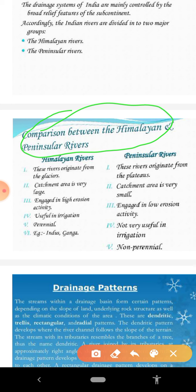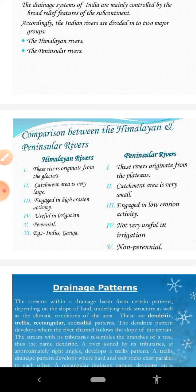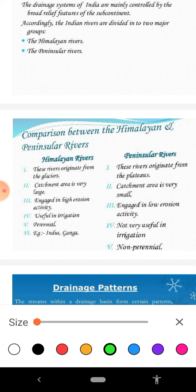Another important point: the catchment area of Himalayan rivers is very large, whereas the catchment area of Peninsular rivers is very small. Catchment area is the area from which a river gets its drainage, or its source of water. Additionally, Himalayan rivers pass through gorges, also called ice-shaped valleys, whereas Peninsular rivers form broad and shallow valleys.